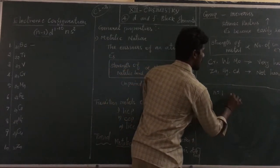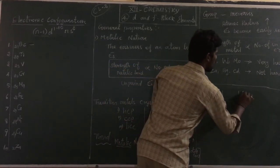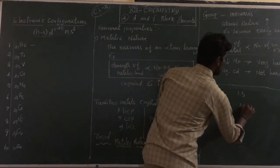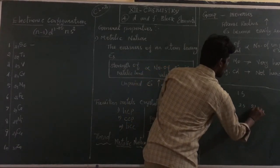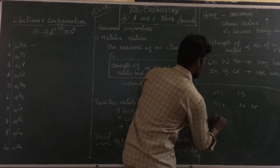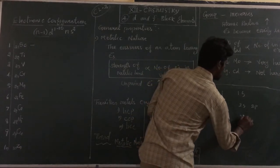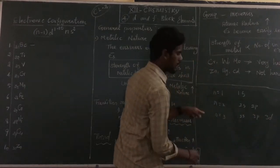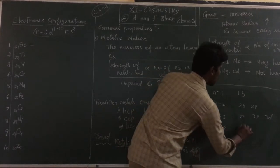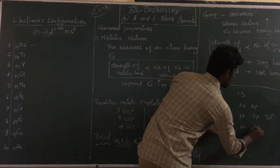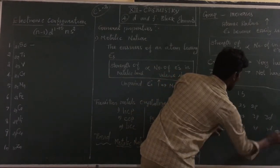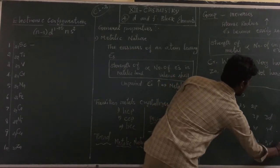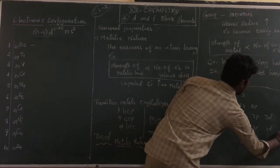For n=1, we have the 1s orbital. For n=2, we have 2s and 2p. For n=3, we have 3s, 3p, 3d. For n=4, we have 4s, 4p, 4d, 4f. And for n=5, we have 5s, 5p, 5d, 5f.